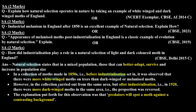Predators started eating the light-colored moths, so their population decreased. Dark-colored moths were not visible to predators, so their population increased. Since the dark-colored moths matched the background better — that is, they adapted better — their survival and population increase is a clear example of natural selection.